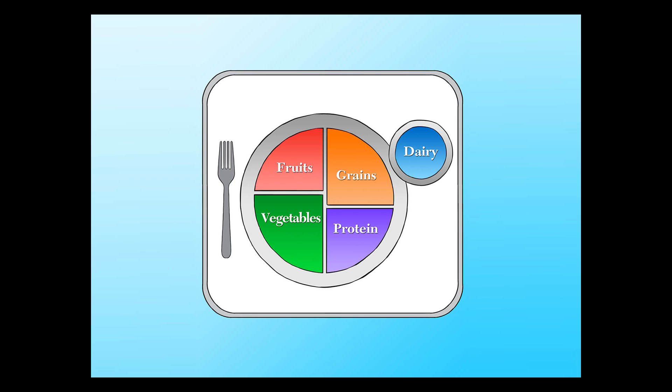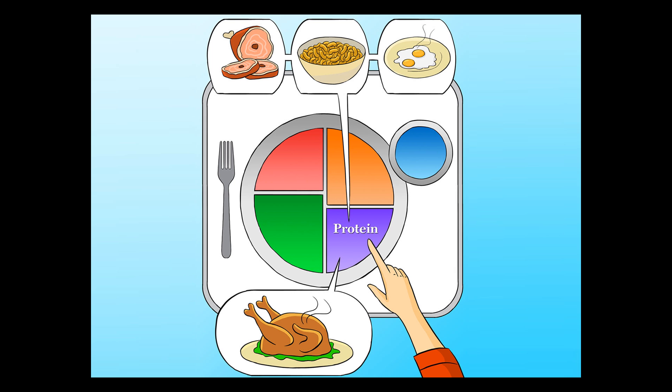First, we have to plan our meal. We look at the plate. Mommy points to the purple spot. She says that is our protein. She tells me that proteins are things like meats, eggs, beans, and nuts. We decide to have my favorite meat, turkey burgers.